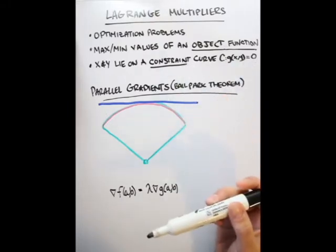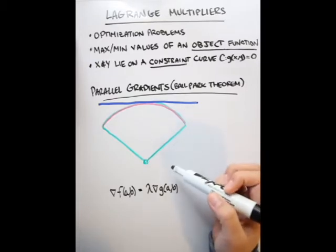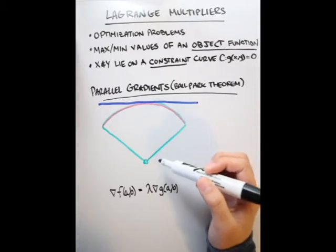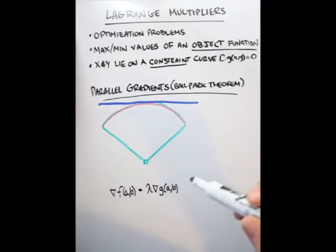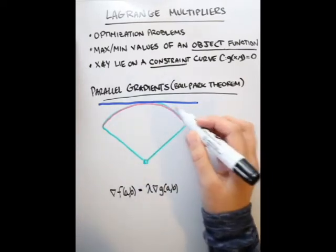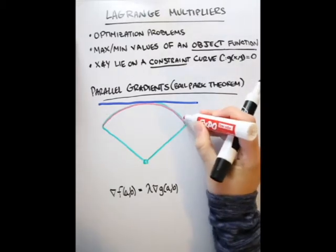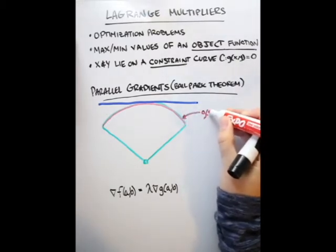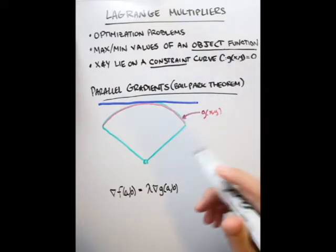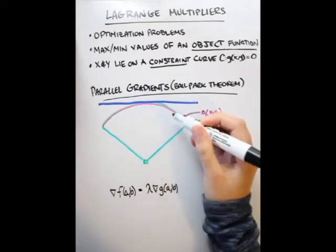In order to talk about Lagrange multipliers, we first have to talk about the parallel gradients theorem, also known as the ballpark theorem. To explain it, geometrically might be the best interpretation to start off with. Basically, if you have your constraint curve for your independent variables, it's this red line here — think of it as the fence of the ballpark. We have some object function, and in this case it's going to be the distance from home plate to the fence.